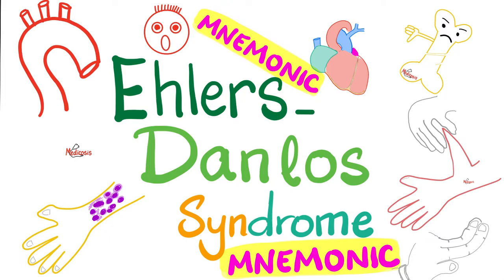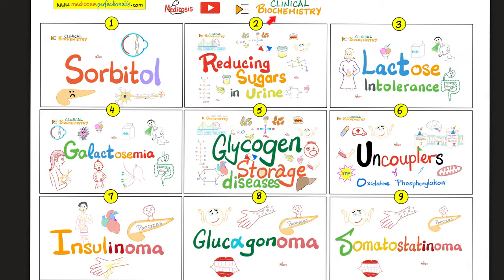Which type of collagen? Well, it depends on the subtype of Ehlers-Danlos syndrome, because this disease has many subtypes. Let's talk about the most common subtypes. It could be a defect in collagen type 3, which is in vessels, or collagen type 5, affecting skin and joints. To get the most out of this video, please watch the previous detailed discussion on Ehlers-Danlos first, and watch my videos in order for maximum understanding and retention.